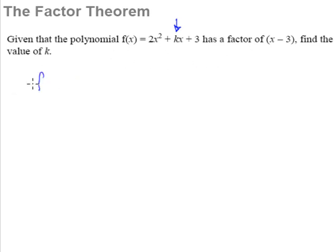So when we know that x minus 3 is a factor of f(x), what this tells us is that when we substitute in x equals 3, we get 2 multiplied by 3 squared plus k multiplied by 3 plus 3 should be equal to 0. Because this should give us the remainder, but since it is a factor, the remainder should be equal to 0.